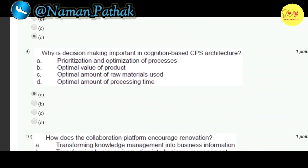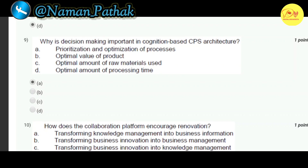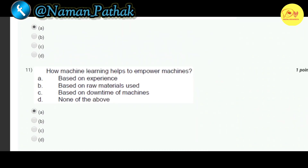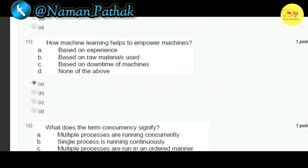Our ninth question: why is decision-making important in cognition-based CPS architecture? Correct option is A — prioritization and optimization of processes. Our tenth question: how does the collaboration platform encourage innovations? Correct option is A — transforming knowledge management into business information. Our next question: how does machine learning help to empower machines? Correct option is A — based on experience.